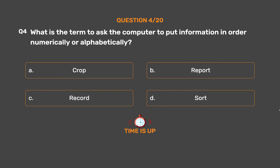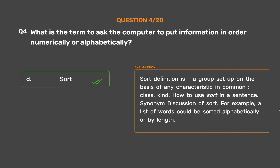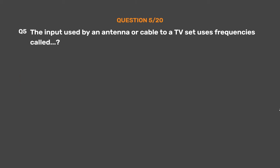The correct answer is Option D: Sort. Sort definition is a group set up on the basis of any characteristic in common — class, kind. For example, a list of words could be sorted alphabetically or by length.